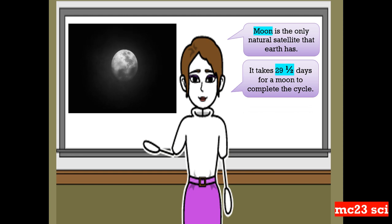It takes 29 and a half days for the moon to complete the cycle. And this is what we call the month.